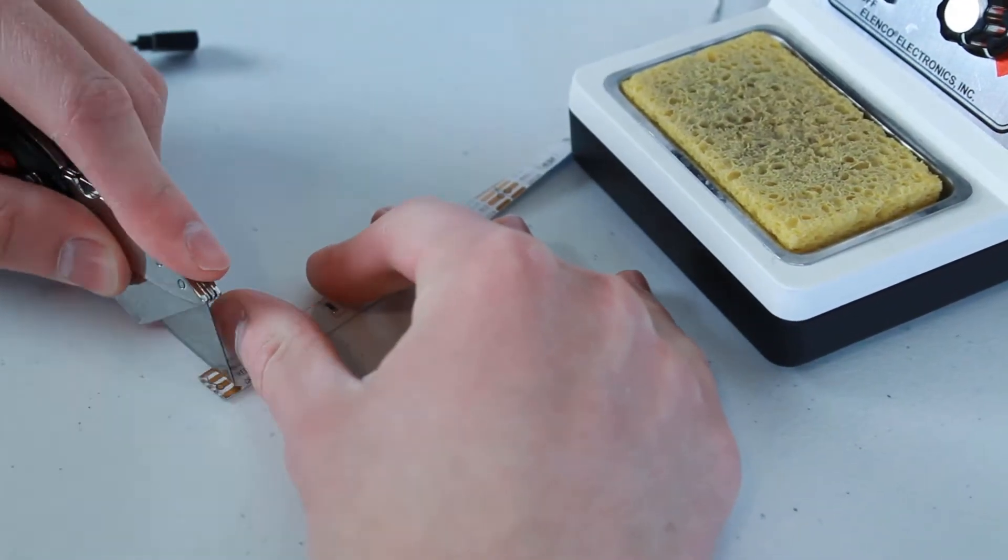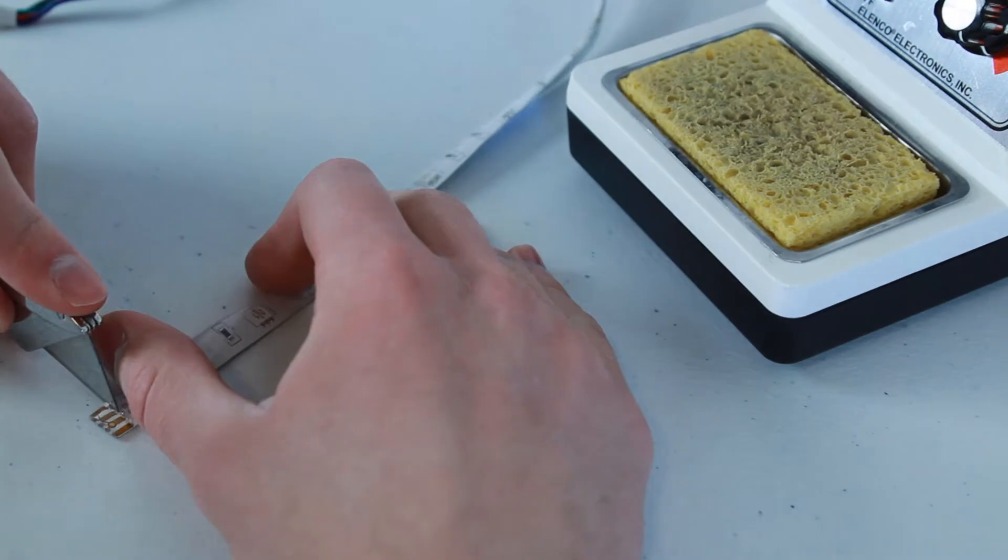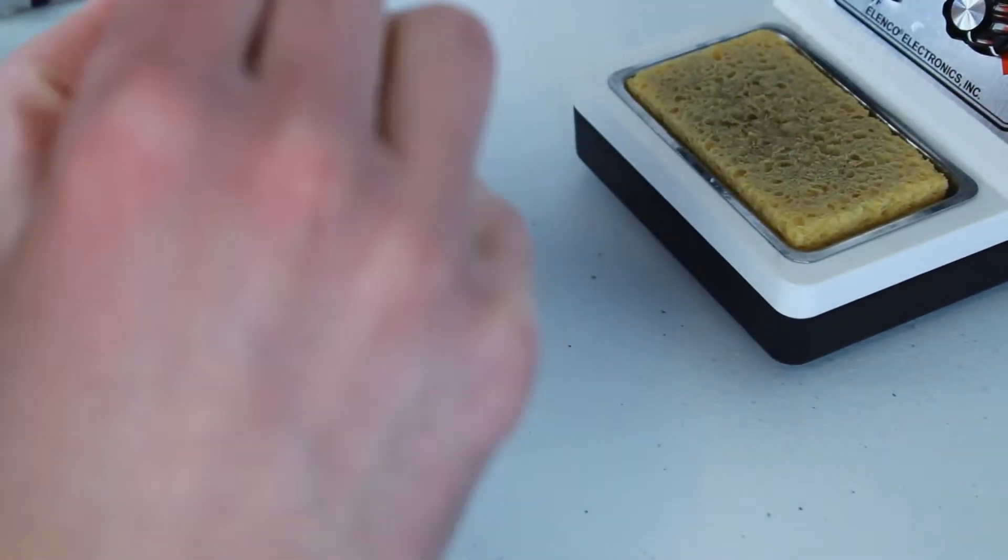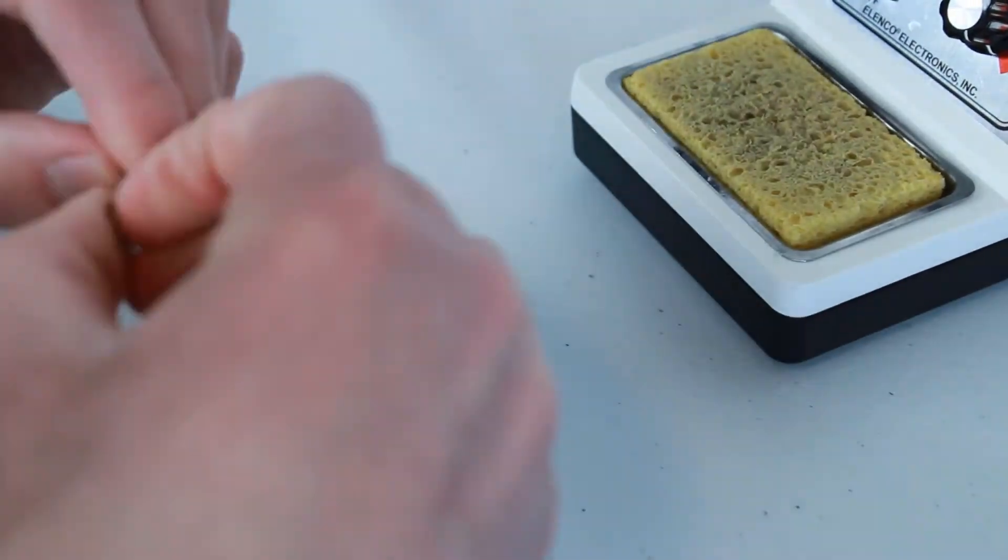Before I begin sewing it onto the vest, I decided to solder extension wire on the other end of the strip so I would not have to do that when it was on the vest. The rubber coating was difficult to remove, but later I found an easier way to do it.